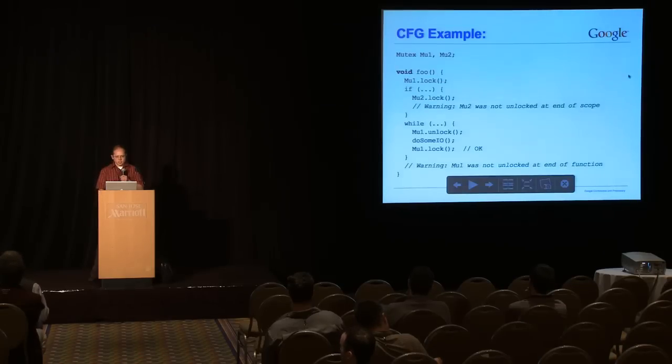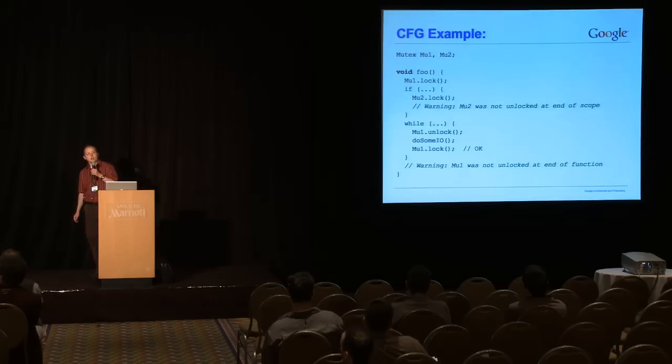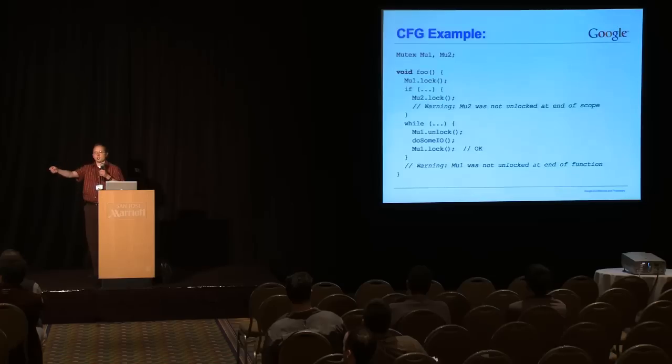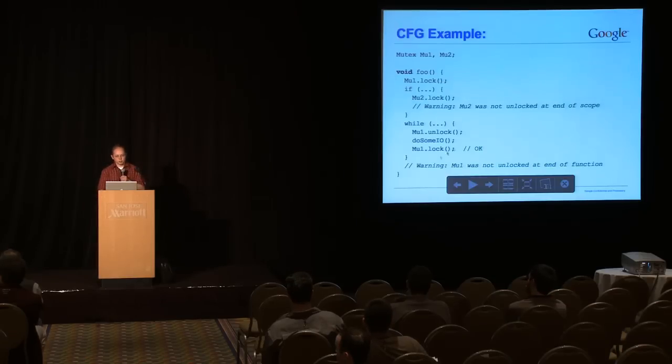Similar requirement on back edges, is lock sets must match. So, lovely. So, here's an example of the kind of warnings you get. We have an if statement here, in which we lock mu2. We only lock it within the if, so as soon as you reach the end of the scope, you're going to get a warning that mu2 is not unlocked at the end of its scope. And the while loop is fine, but then we forgot to lock mu1 at the end of the function, so it always generates warnings if you don't match up your locks and unlocks. If you forget to unlock something, or if you unlock something without acquiring the lock first, it will generate a warning on that, too.